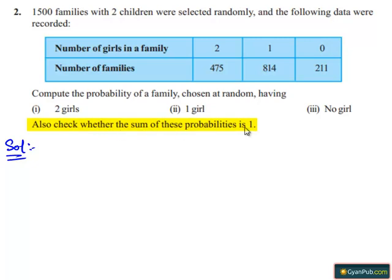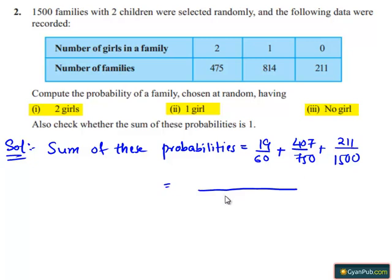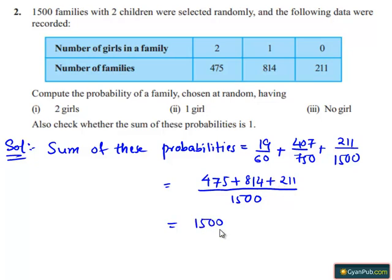Also, we have to check whether the sum of these probabilities is 1. Sum of these probabilities equals 19/60 plus 407/750 plus 211/1500. Taking LCM as 1500, we get 475 plus 814 plus 211, which is 1500/1500, which equals 1. Therefore, the sum of these probabilities equals 1.